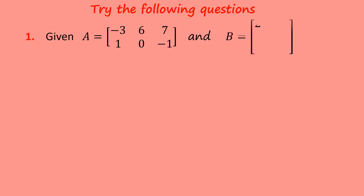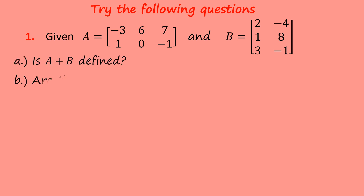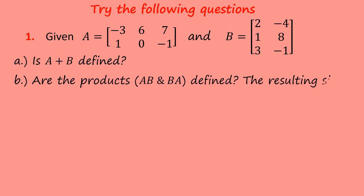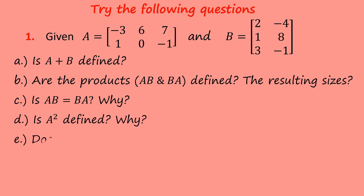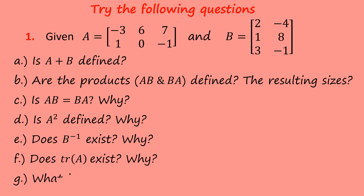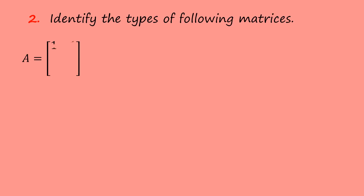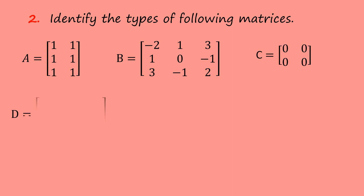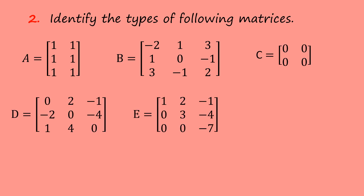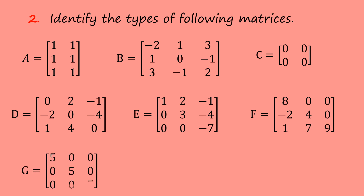Given A as a 2 by 3 matrix and B as a 3 by 2 matrix: Is A plus B defined? Are the products AB and BA defined, and what are the resulting sizes? Does AB equal BA, and why? Is A squared defined, and why? Does B inverse exist, and why? Does tr(A) exist, and why? What is the size of (AB)^T? The second question is to identify the types of the following matrices — whether triangular, unit, symmetric, and so on.